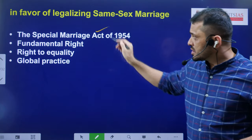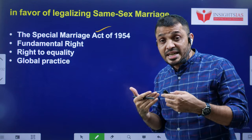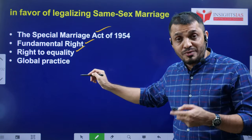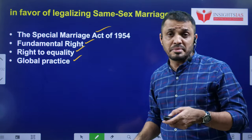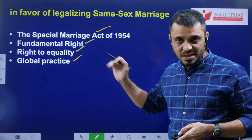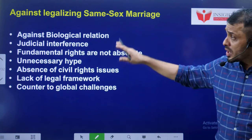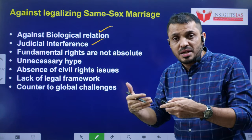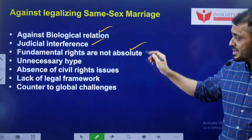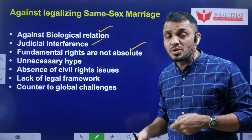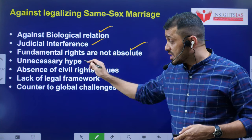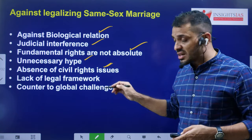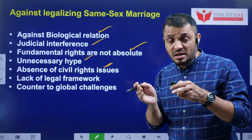Arguments in favor of same-sex marriage: it is a fundamental right to equality with heterosexuals, and many countries globally are accepting it. Arguments against same-sex marriage: it goes against biological norms; if courts interfere, it constitutes judicial overreach; fundamental rights are not absolute but limited in nature; and when same-sex marriages occur, sometimes civil rights of either partner are not being protected adequately.